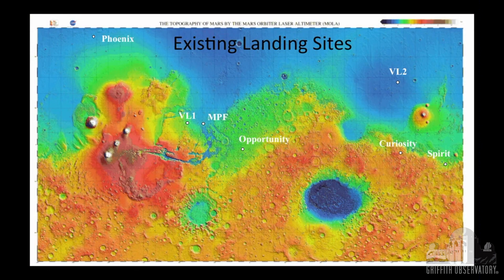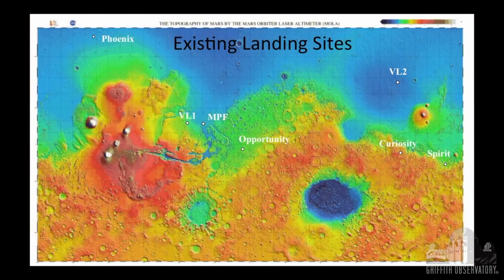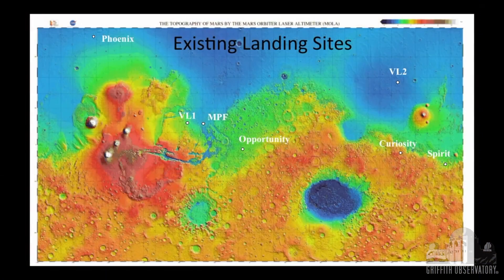What's shown in white are the existing safe landing sites — spacecraft that survived when they landed: Viking 1, Viking Lander 2, Pathfinder, Spirit, Opportunity, Phoenix, and Curiosity. I did that all from memory. It turned out I was involved in just about all of those except the Vikings, so it wasn't too hard to remember them.